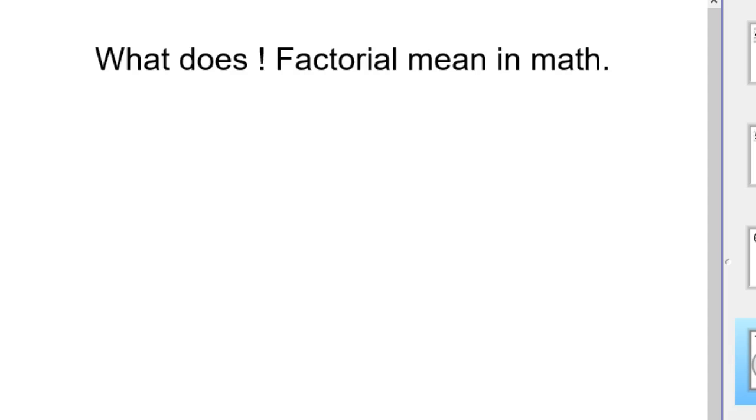A factorial is when you have 5 exclamation point, or 5 factorial. That means 5 times 4 times 3 times 2 times 1. You just multiply them out, so that would be 120. That's basically what it is.